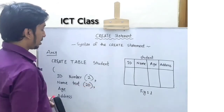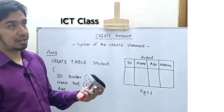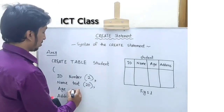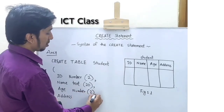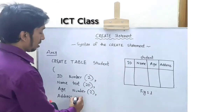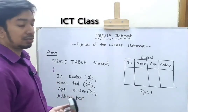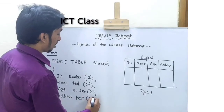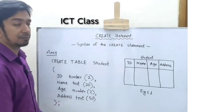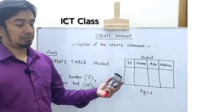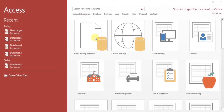I took size 20 for name. Age is NUMBER — we write numbers like 19 or 14 — so data type is NUMBER, size 2. For address, data type is TEXT because we use lots of characters like A to Z, and I took size 50. Finally, close the bracket and add a semicolon. So that's the answer from the stem — how to write CREATE TABLE using SQL command. We are using Microsoft Access 2016.